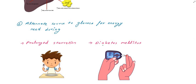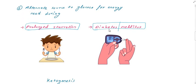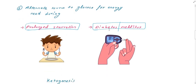Ketone bodies are formed during excessive starvation or a prolonged diet. There is also a specific disease condition — diabetes mellitus — where ketone bodies are produced during prolonged starvation and diabetes mellitus, when the body requires an alternate source of energy.